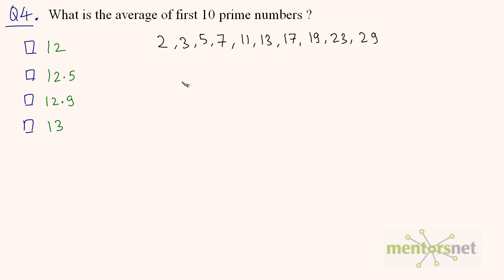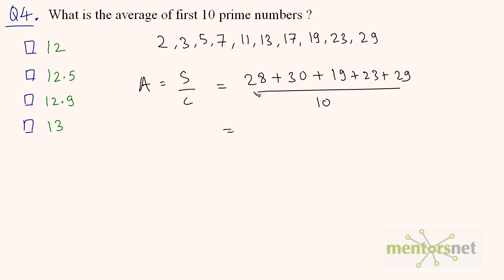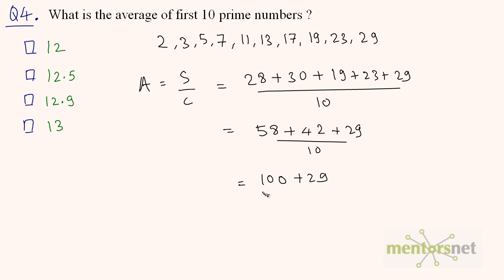Average equals sum divided by count, so we divide by 10. Adding them: 2 plus 3 is 5, plus 5 is 10, plus 7 is 17, plus 11 is 28. Then 28 plus 13 plus 17 is 58, plus 19 plus 23 plus 29. Working through: 58 plus 42 is 100, plus 29 is 129. So 129 divided by 10 equals 12.9 — that is the answer.